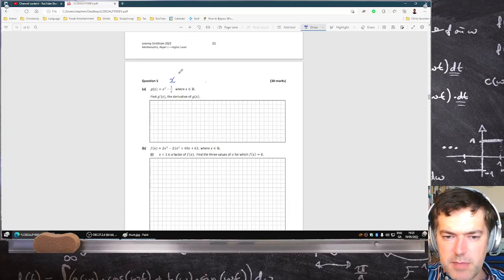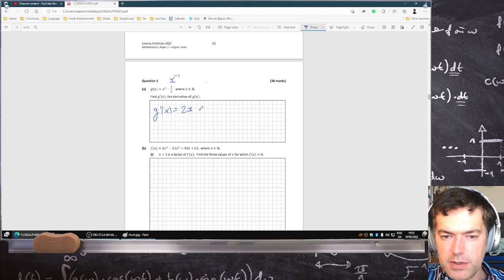So if I just change that to x power minus one, then the derivative would be, bring down the power, reduce the power by one, bring down the power, reduce the power by one. So it's 2x plus one over x squared.